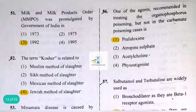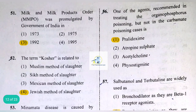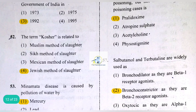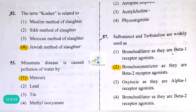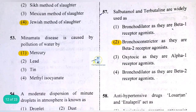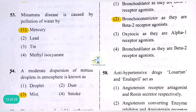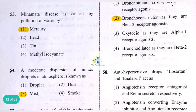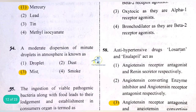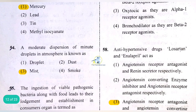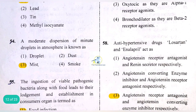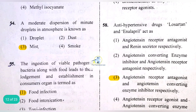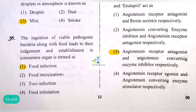Starting off: Milk and Milk Products Order (MMPO) was promulgated by the Government of India in 1992. The term 'culture' is related to the Jewish method of slaughter. Minamata disease is caused by pollution of water by mercury. A moderate dispersion of minute droplets in the atmosphere is known as mist.